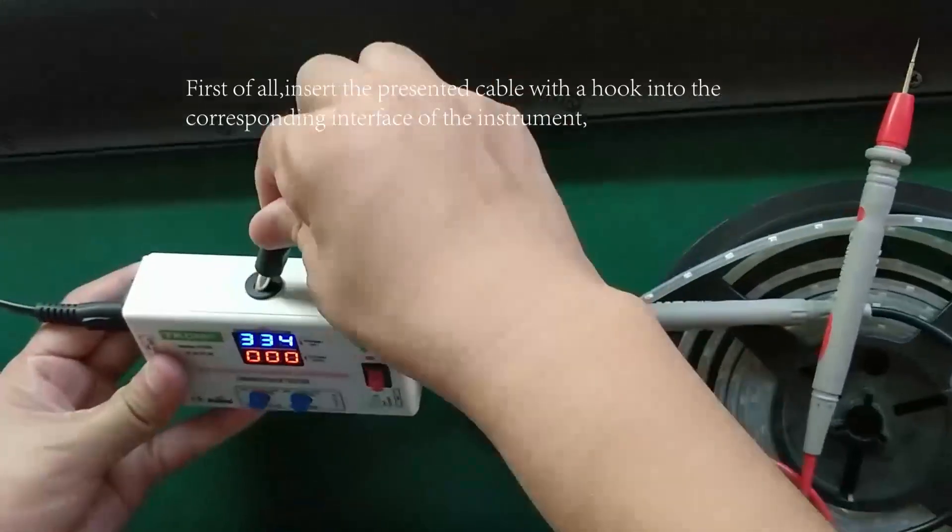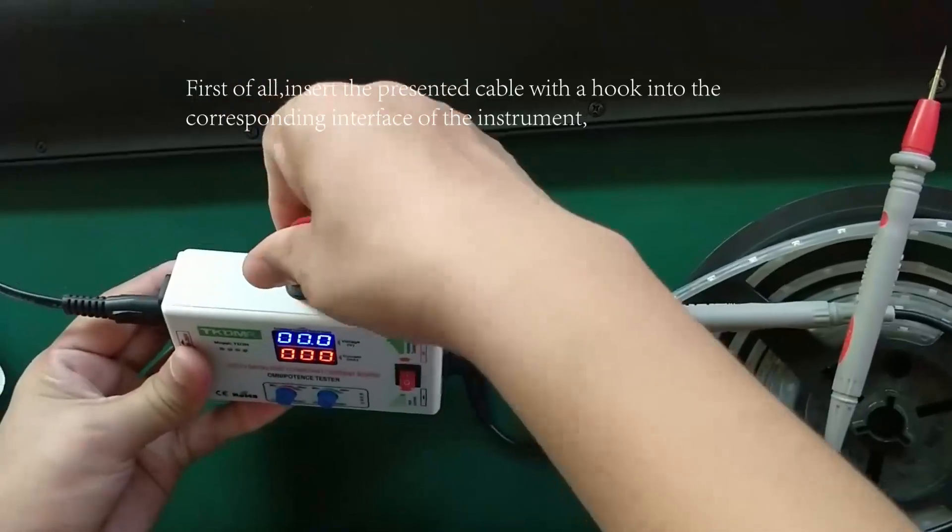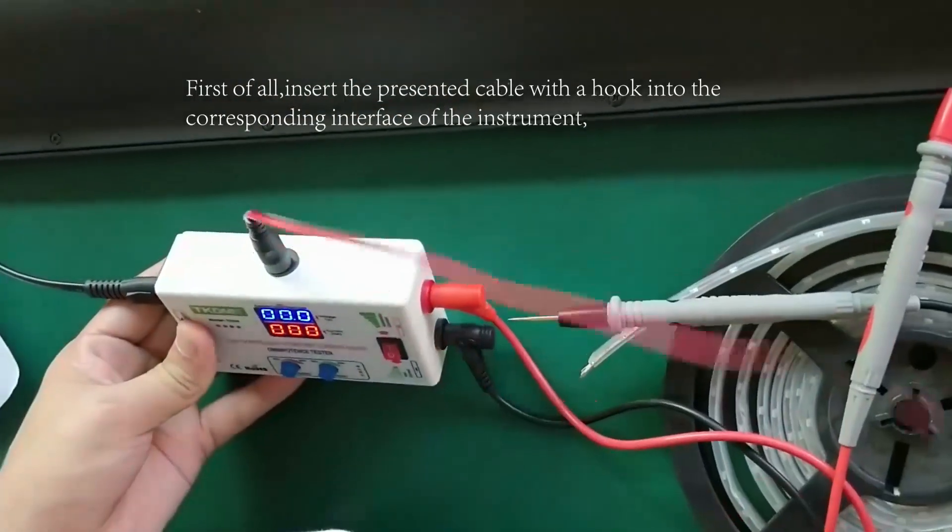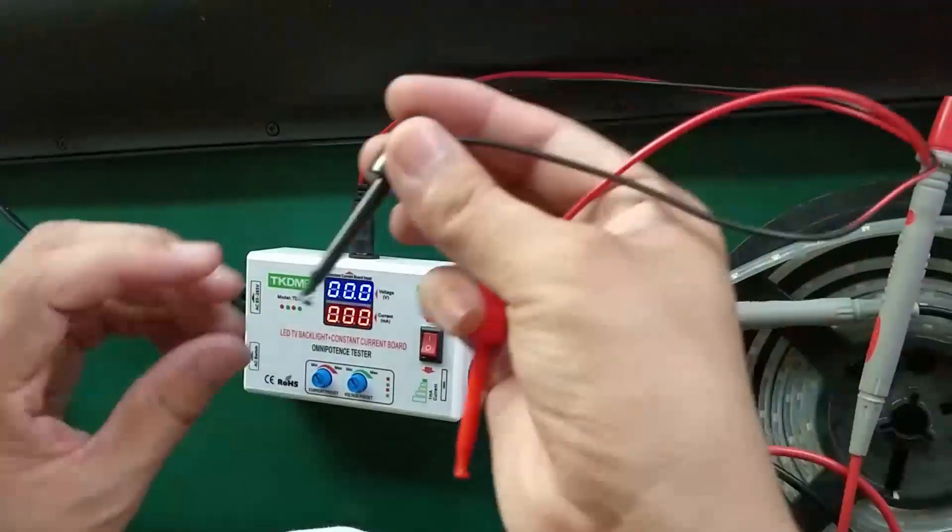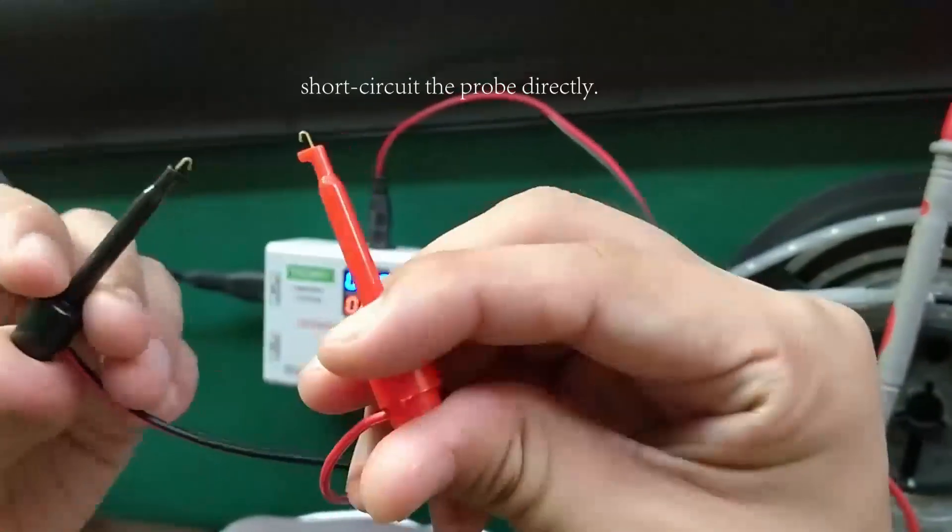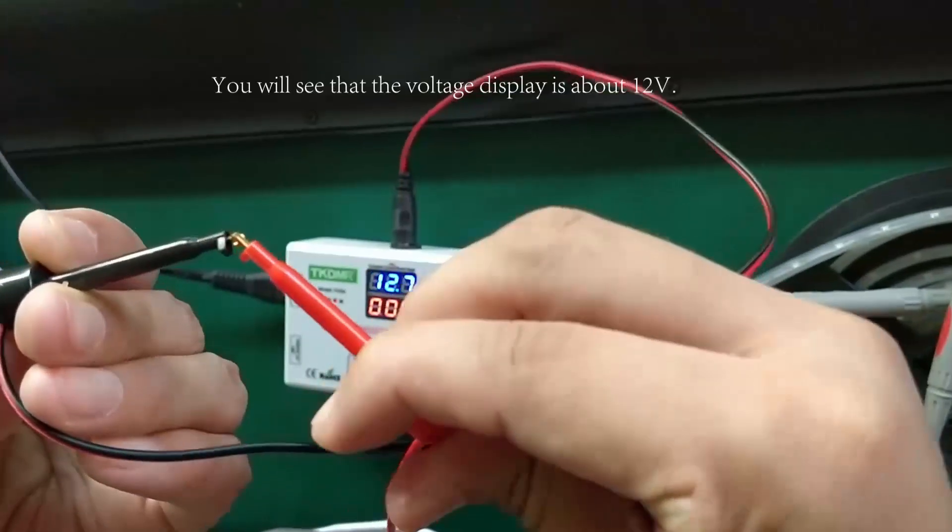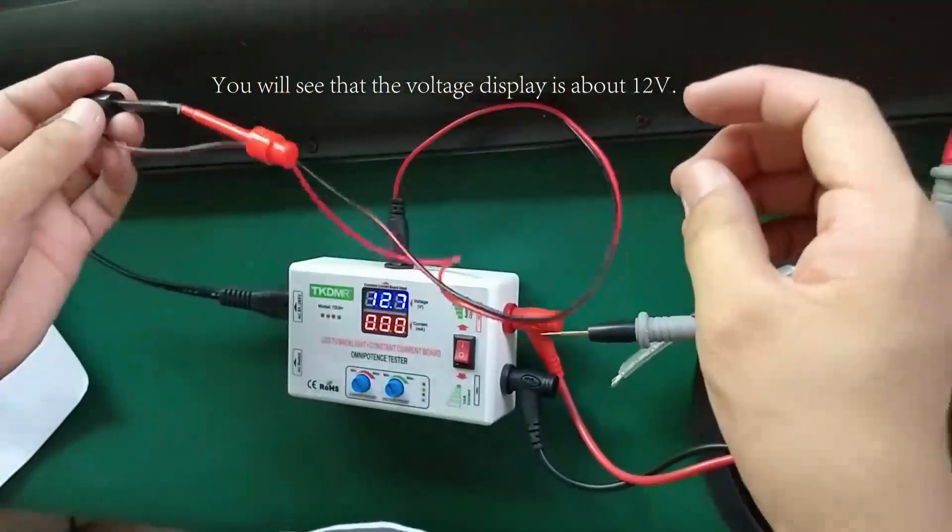First of all, insert the presented cable with a hook into the corresponding interface of the instrument. Then, short circuit the probe directly. You will see that the voltage display is about 12.